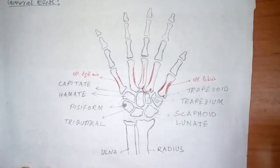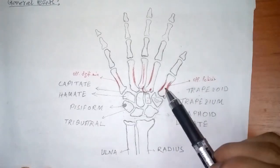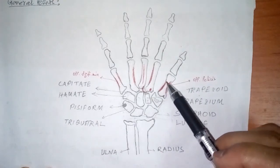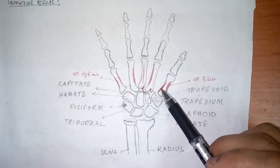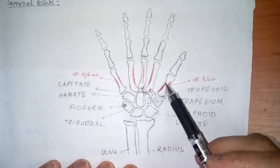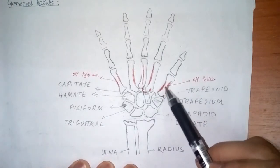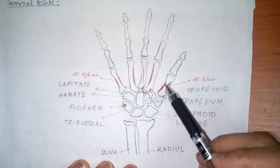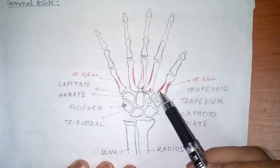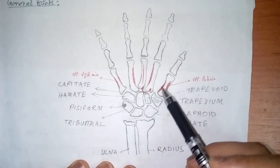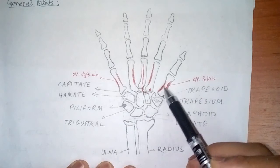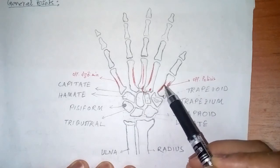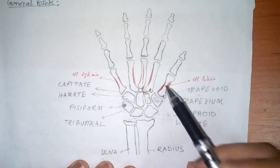The first palmar interosseous muscle is inserted on the ulnar side of the shaft. This is the ulnar side of the base, and this is the part of the shaft — so this is the first palmar interosseous muscle.